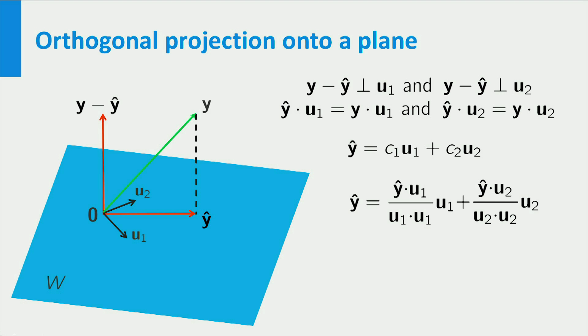Combining these findings leads to the conclusion that ŷ must be equal to the linear combination of u1 and u2 with coefficients equal to the inner product of u1 and Y divided by the inner product of u1 with itself, and a similar term involving u2.